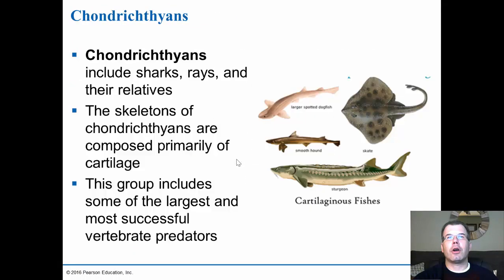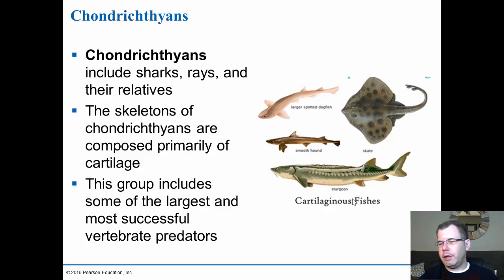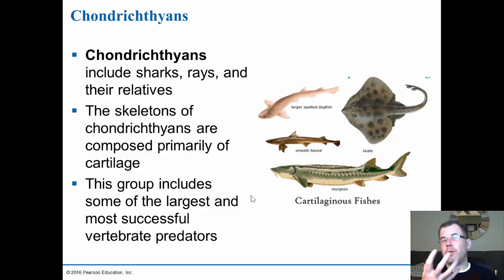The chondrichthyans are the sharks and cartilage fishes — including sharks, rays, and relatives. The sturgeon, which many people fish for near Green Bay and Sturgeon Bay, is actually a cartilage fish more closely related to sharks than to regular bony fish. These are the largest and most successful vertebrate predators, and we still have them today. The big difference between these and other vertebrates is their skeleton is all cartilage, not bone. The next group, the osteichthyes, meaning bony fish, includes the ray-fin fishes — so named because they have spines for their fins, which they use as a defense mechanism against predators.